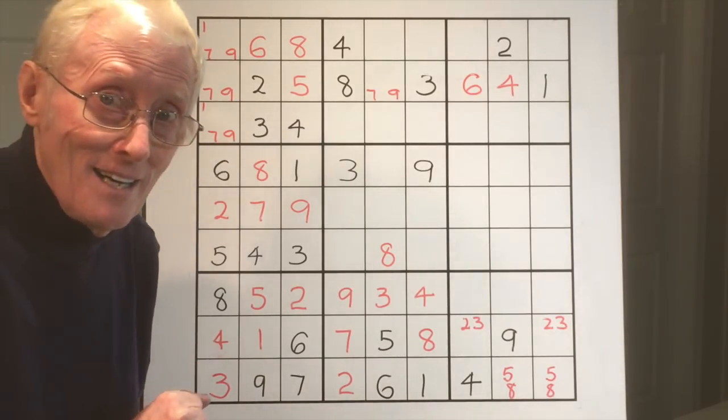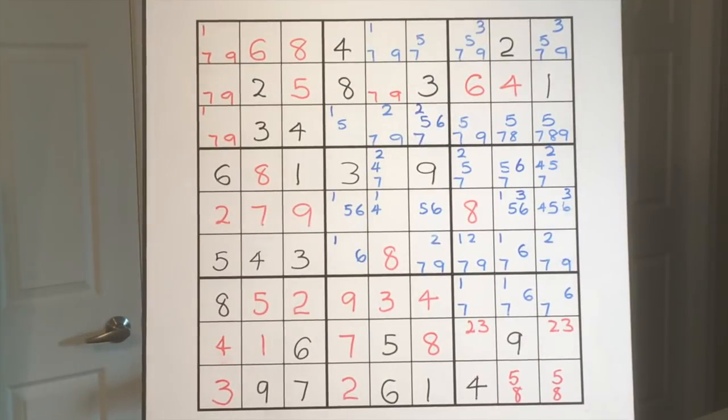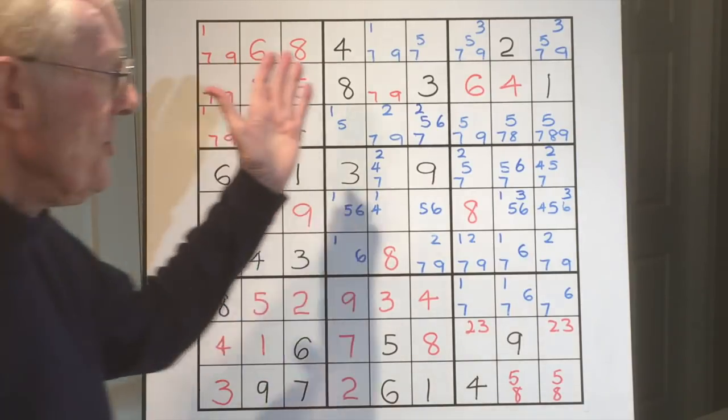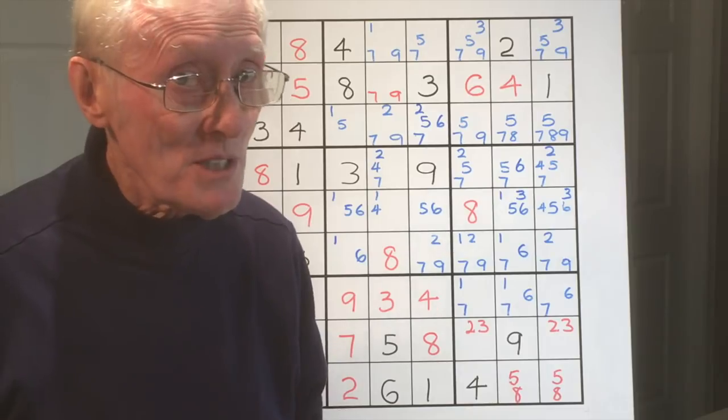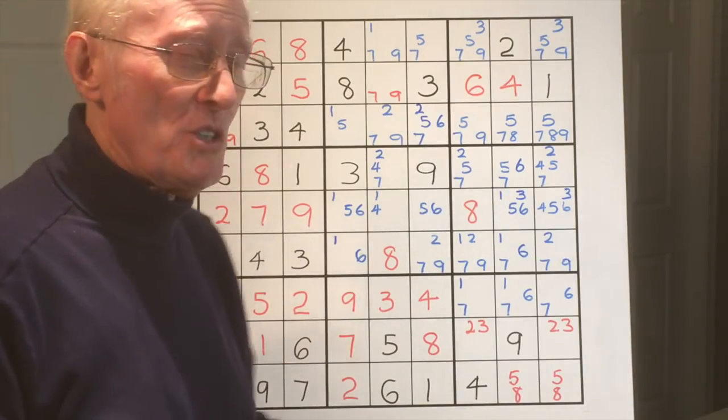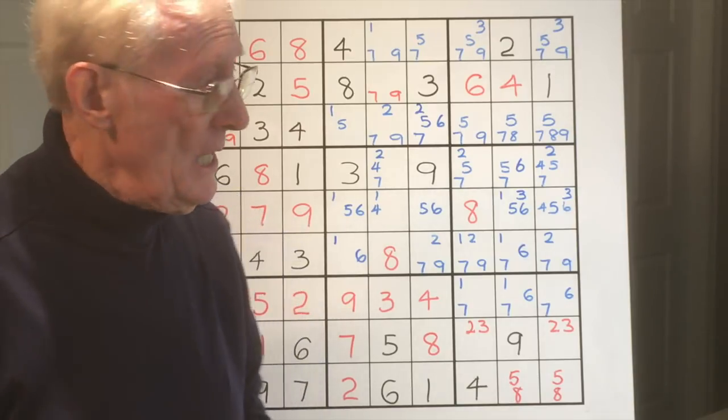Okay, well here we are back again. And if you have a look at the puzzle you'll see that I've entered all these little blue numbers. They're the possible numbers, and that's what you do when you really got stuck and you have to put in all the numbers.